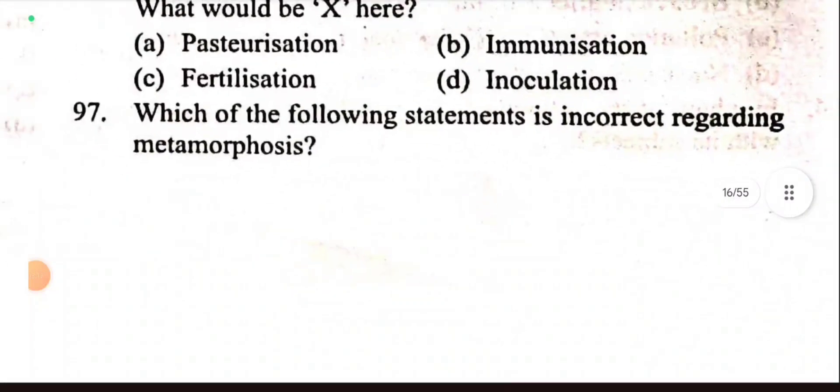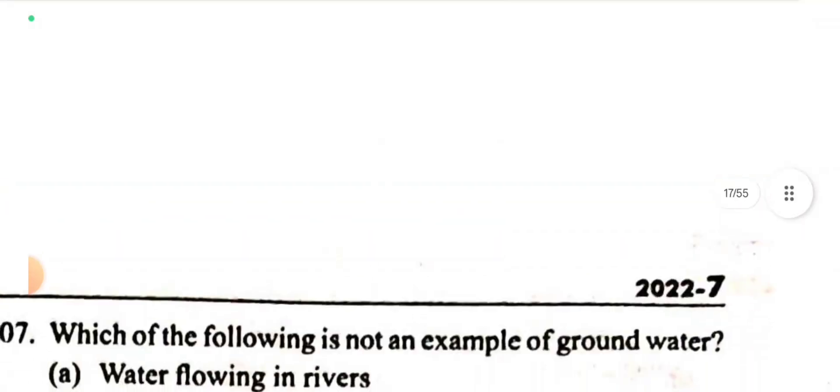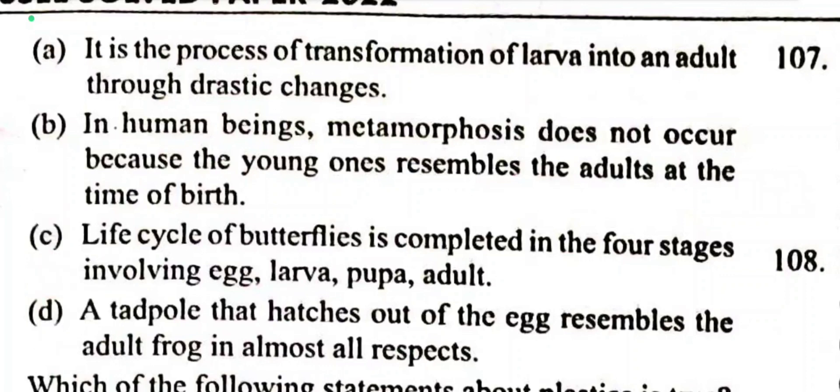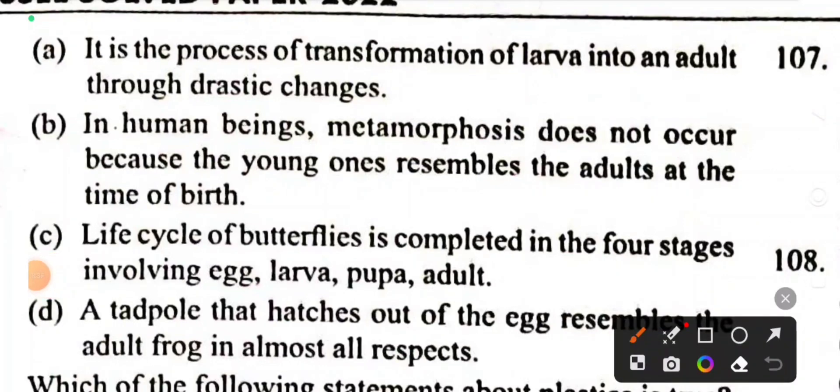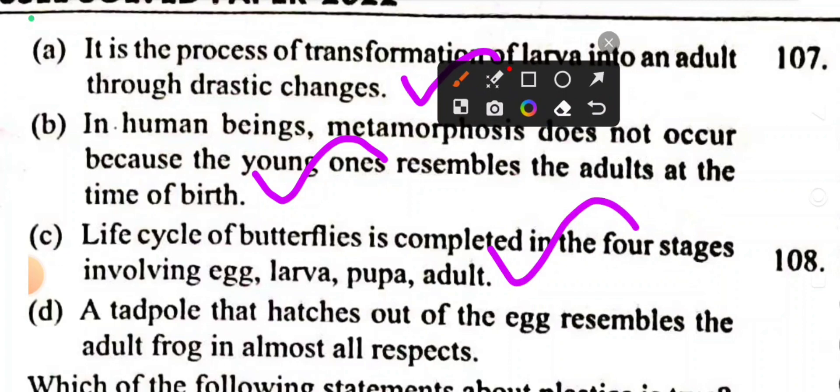Question 97: Which statement is incorrect regarding metamorphosis? Metamorphosis is the process of transformation of larva into an adult through drastic changes. Correct. In human beings, metamorphosis doesn't occur because the young one resembles the adult. Yes. Life cycle of butterflies is completed in four stages: egg, larva, pupa, adult. Yes. A tadpole that hatches out of the egg resembles the adult frog in almost all respects. No, wrong. So option D is false.